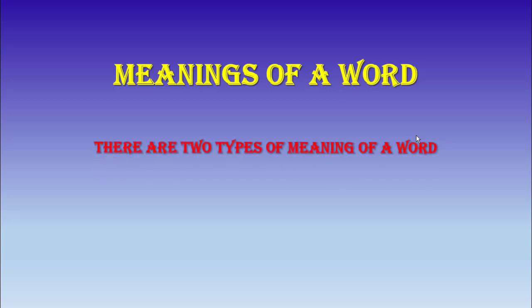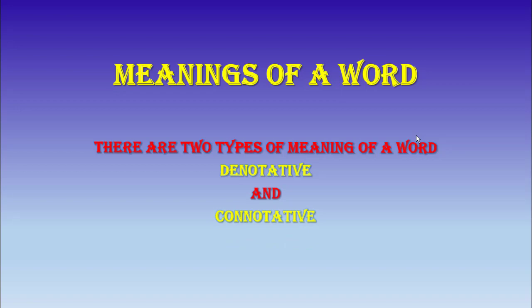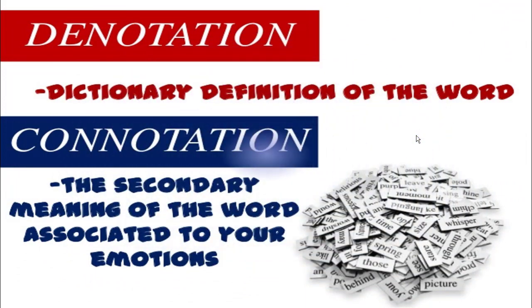A dictionary can give you a vast variety of meanings. In our daily conversation, a word can have two types of meaning: first is denotative and second is connotative meaning. These terms may be new for you, so let me explain. Denotation is simply the dictionary definition of a word. Connotation is the secondary meaning of the word, associated with your emotions.